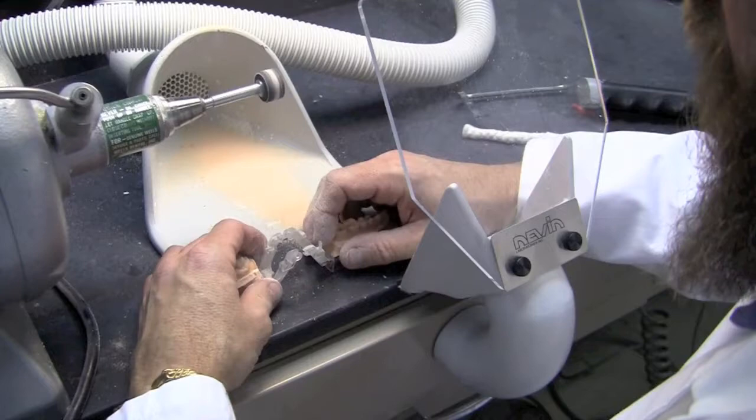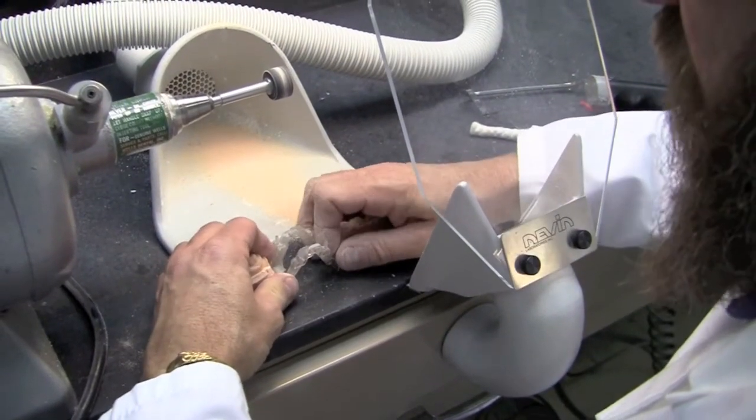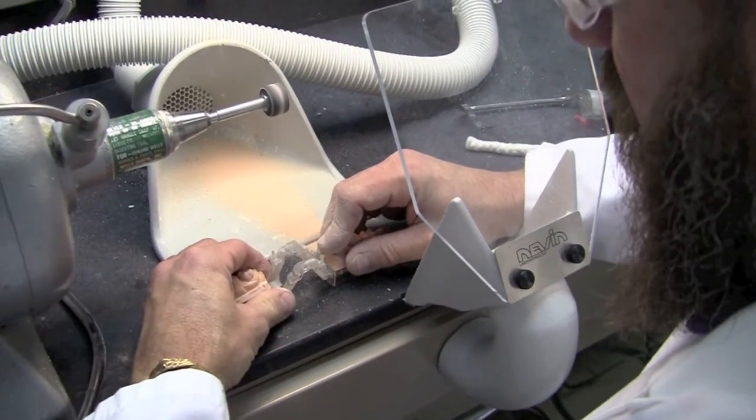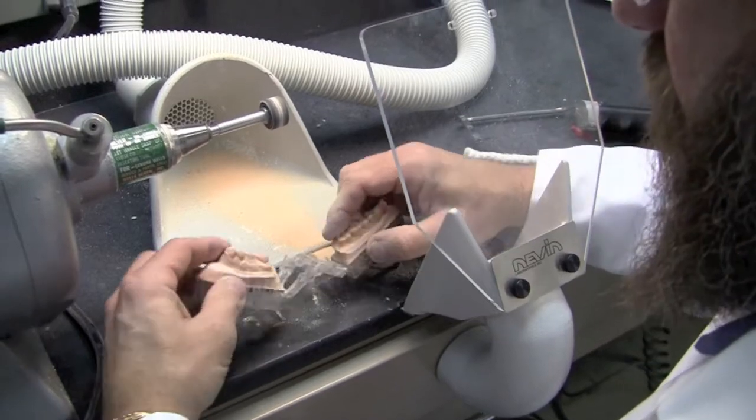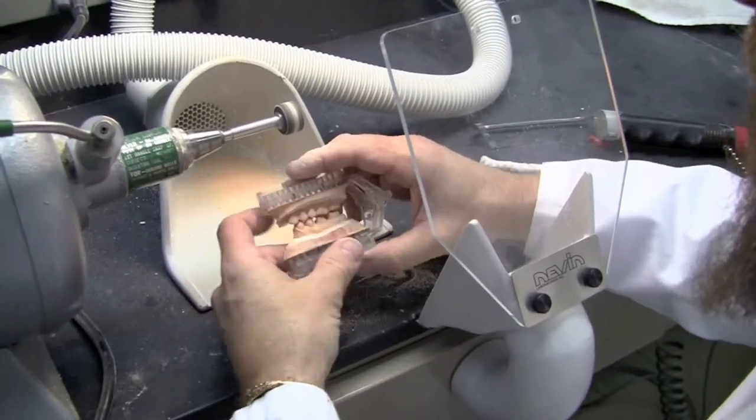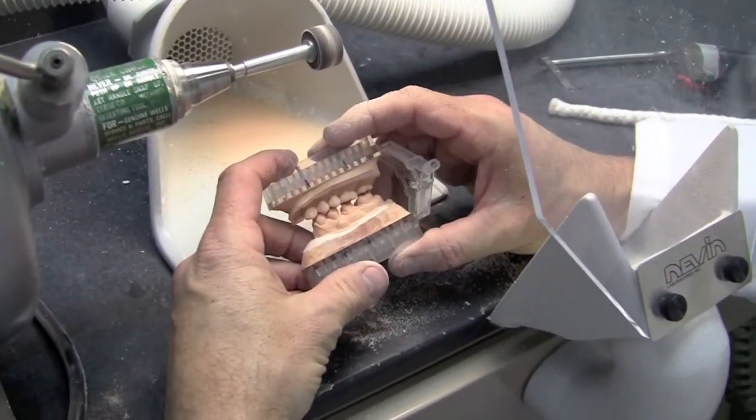Once trimmed, we're able to put the two sections back together, placing them on the table and clicking them together like so. Now we can move on to the die sawing process.